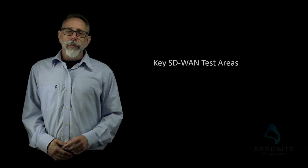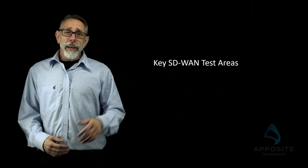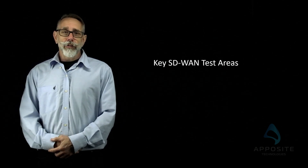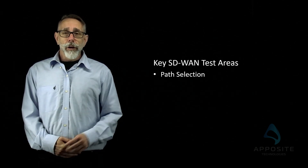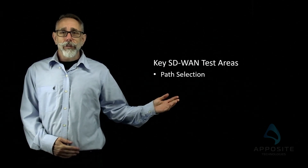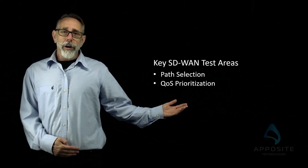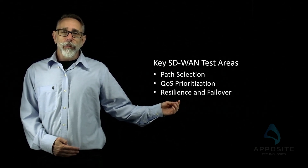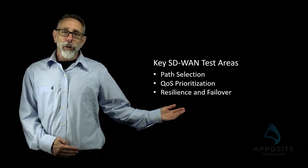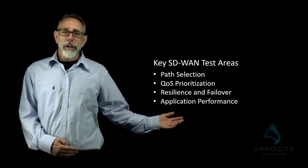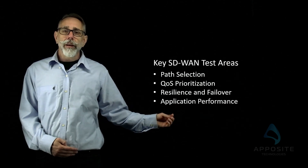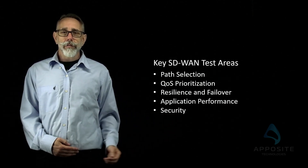There are five main areas to test to ensure your SD-WAN is performing at its best: path selection, quality of service prioritization, resilience and failover, application performance, and security.